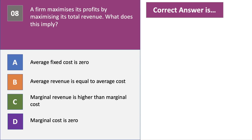Question 8. A firm maximises its profits by maximising its revenue. What does this imply? Please press the pause button and have a go at question 8.